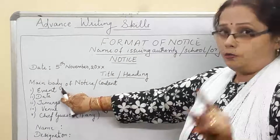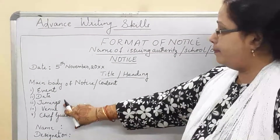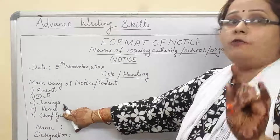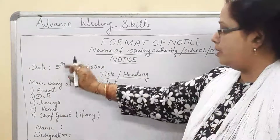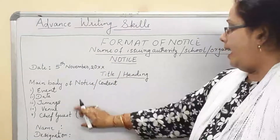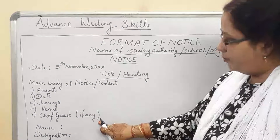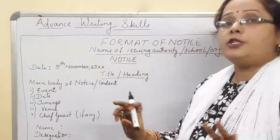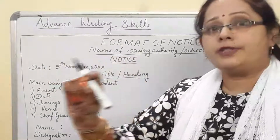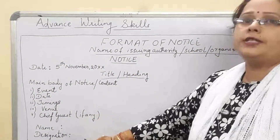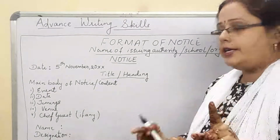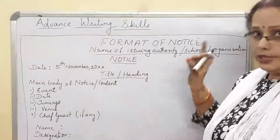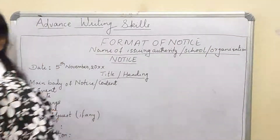The content includes the event, what event it is, the date it is going to happen, the timings, where it is going to take place — all of this in point-wise format. If any chief guest is present, mention that too. If a name is given in the question, write that name and designation — for example, 'Palavi, Chief Secretary of the club'. If no name is given, write 'XYZ'. Everything goes inside a box.